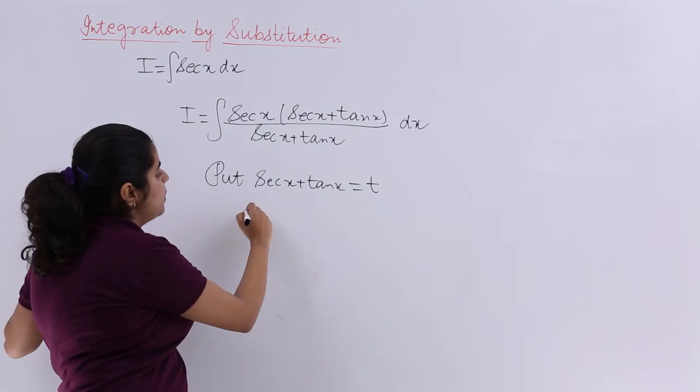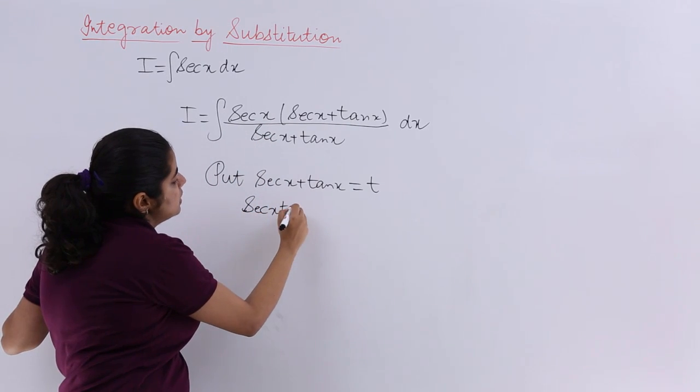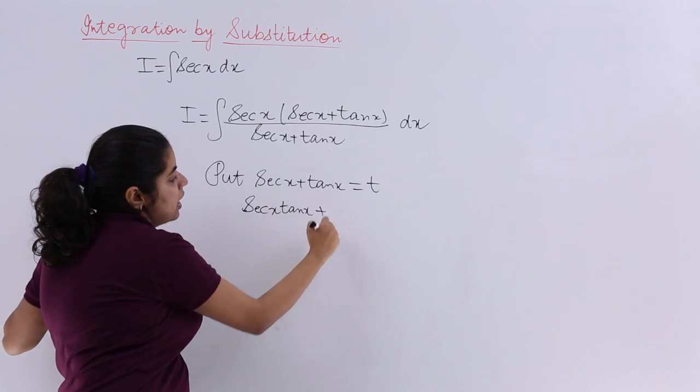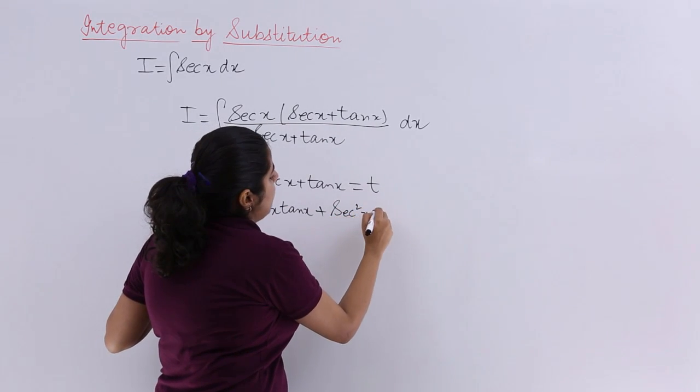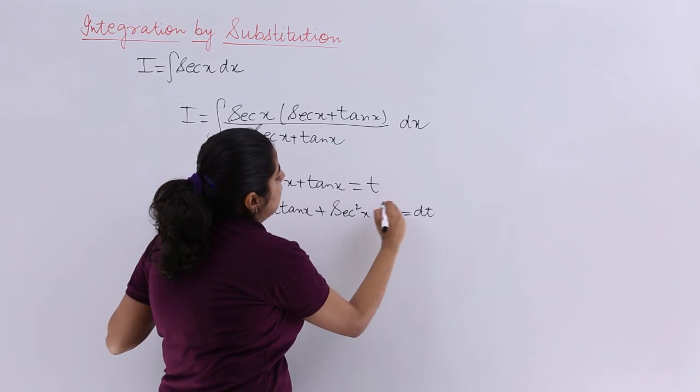Now you differentiate it. It becomes sec(x)tan(x) plus sec²(x), since the differentiation of sec(x) is sec(x)tan(x) and tan(x) differentiation is sec²(x). dx equals dt.